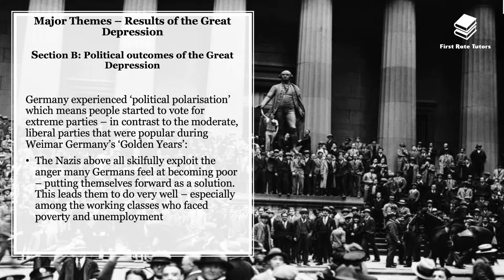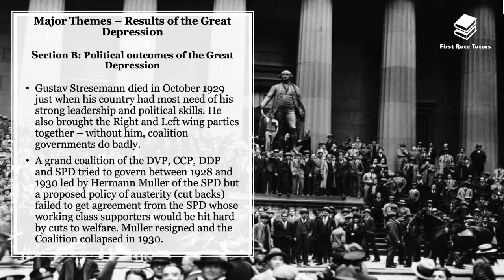This led the Nazis to do really well especially among the working classes facing poverty and high unemployment. It was also a huge political disaster that Gustav Stresemann had died in October 1929, just when his country most needed his strong leadership and political acumen. He had united right and left-wing parties, and without him political polarization accelerated. A grand coalition of the DVP, ZP, DDP, and SPD tried to hold the Weimar Republic together between 1928 and 1930, led by Hermann Müller of the SPD.